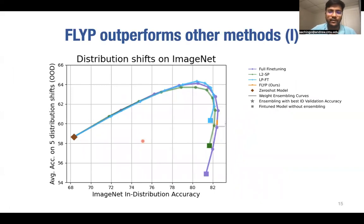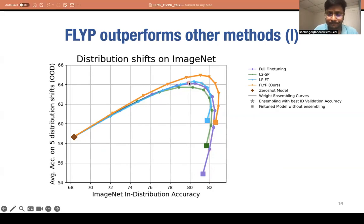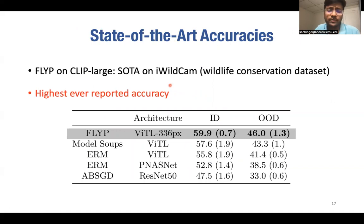Outperforms the baselines across a wide range of tasks. Let's first look at ImageNet and these fancy curves. The brown diamond here represents the zero-shot accuracy. Basically, these curves are the ID over the frontier curves. These squares here represent the fine-tuned accuracies. And these curves represent the accuracies when the zero-shot and the fine-tuned weights are linearly interpolated. The orange curve here shows the ID-OD frontier curve obtained using our proposed approach FLYP. Note that this frontier curve lies above and to the right of the frontier curves obtained using all the baselines. What this implies is that for any given ID accuracy, FLYP gives a higher OD accuracy. Similarly, we test our approach on Wilds iWildCam dataset and we get the highest ever reported accuracy.